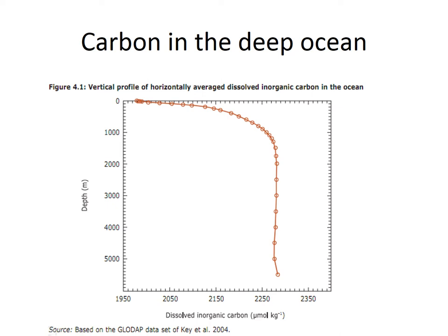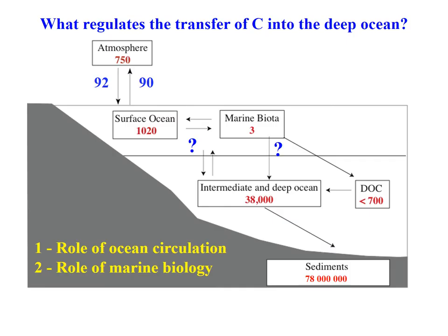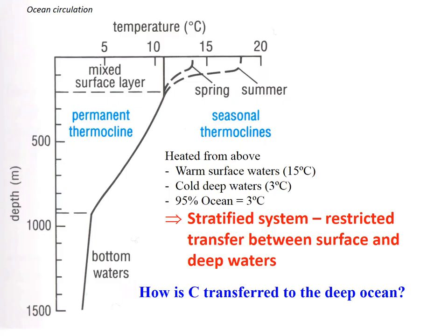Moving carbon around into different ocean boxes: the surface ocean equilibrates with the atmosphere, determining the surface concentration. But we have fluxes of carbon between the surface ocean, marine biota, and the deep ocean that can cause changes in concentration. The surface ocean is stratified — buoyant and warm at the top where life is — so it's very hard to mix between the surface layer and the deep layer.